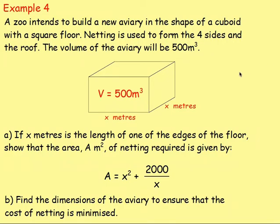Example four: a zoo intends to build a new aviary in the shape of a cuboid with a square floor. Netting is used to form the four sides and the roof. The volume of the aviary will be 500 cubic metres. Part a: if x metres is the length of one edge of the floor, show that the area A of netting required is given by A = x² plus 2000/x.